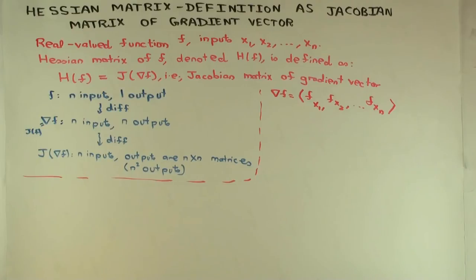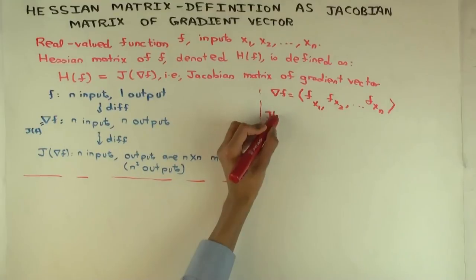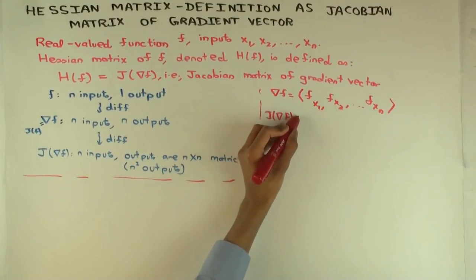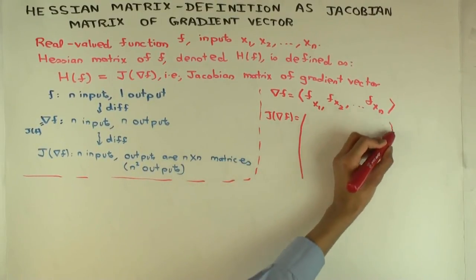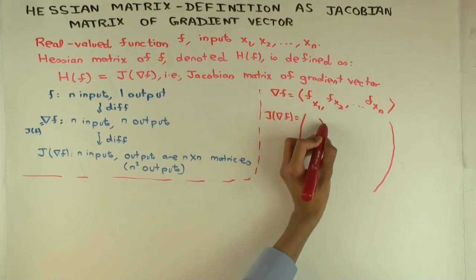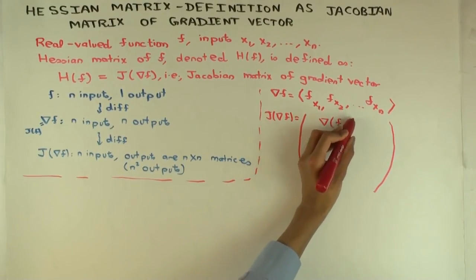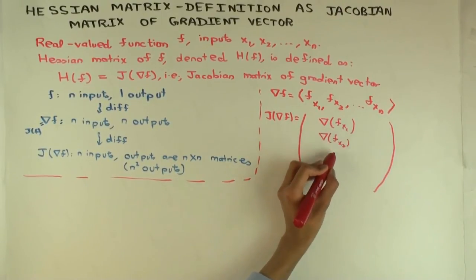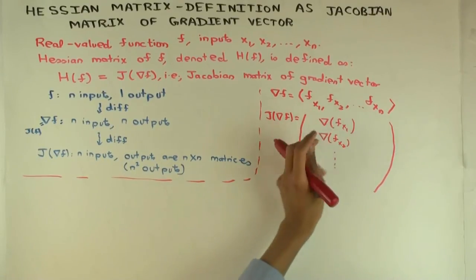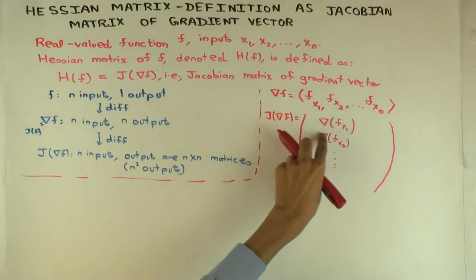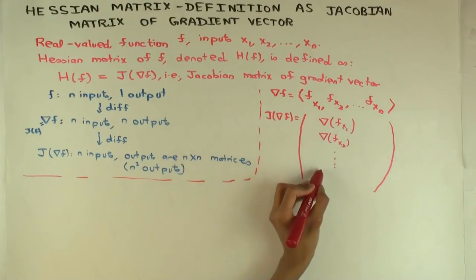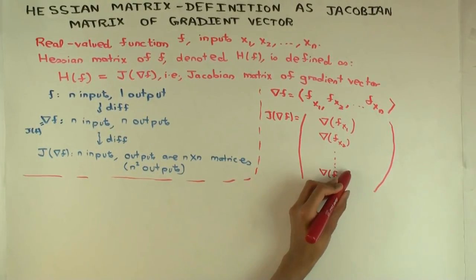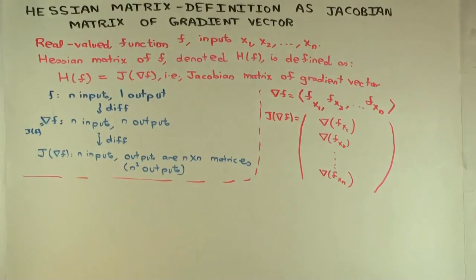Now in order to take the Jacobian, what do I need to do? Well, the Jacobian of this will be, what will it be? So it will be nabla of f sub x1, nabla of, what's the next one? f sub x2. And each of these is a row of length n.